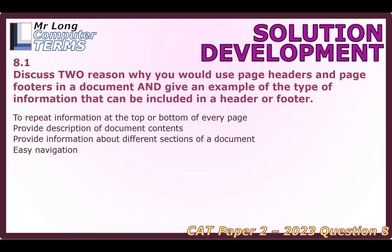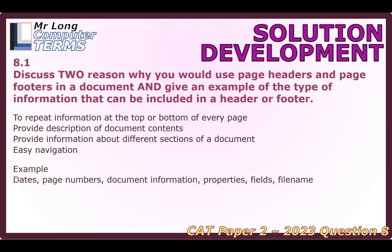If you've got a document divided into multiple sections, maybe appendices, you might want different information at the top and bottom of those pages. Headers and footers also provide easy navigation, especially with page numbering. That's a really useful thing for finding a particular page. Examples of information you can include are page numbers, dates, document information, file name, file path, properties or fields, author, and subject.